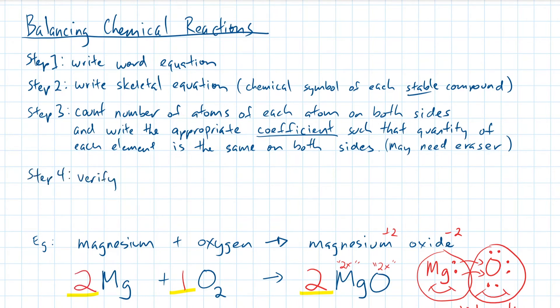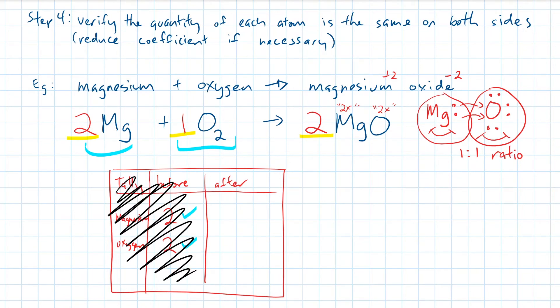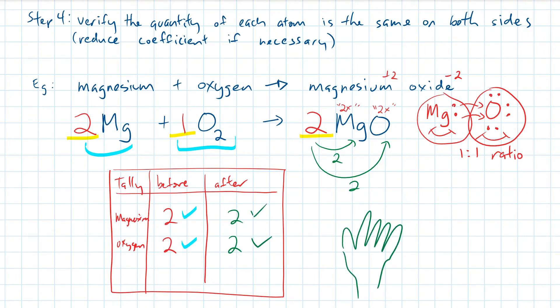Step 4: Verify that the quantity of each atom is the same on both sides. On a separate piece of paper, or in your head, create a tally chart of all the atoms involved in the chemical reaction. Here we started off with 2 magnesiums and a pair of oxygens. Cover your answers on the left, and tally a count of all the atoms on the right. Here we have 2 magnesiums and 2 oxygens. Remove your hand and see if the numbers match up. Now give yourself a high five.